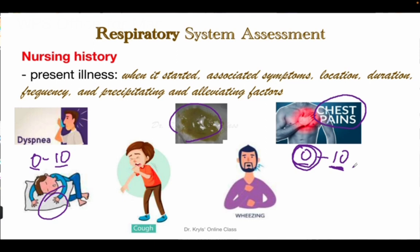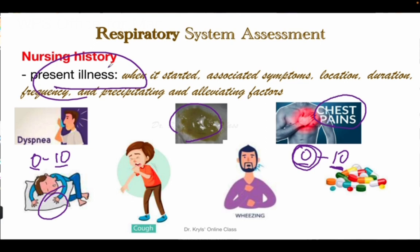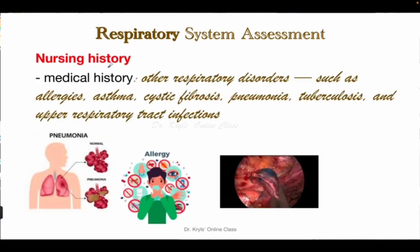Also in the present illness, ask about the use of prescription and over-the-counter drugs — whether medications are prescribed by the doctor or bought over the counter. Ask if the patient uses herbal medicines or herbal remedies, vitamins or nutritional supplements, and any complementary therapies. These are all data we need to include in the present illness section.